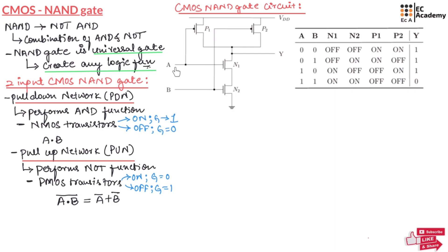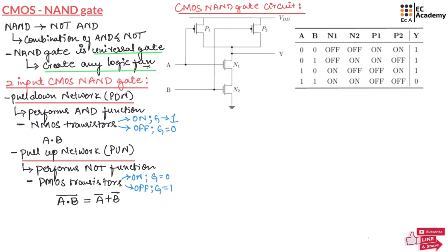When A is equal to 0 and B is equal to 1, transistor N1 will be OFF, N2 will be ON, P1 will be ON, and P2 will be OFF. Since transistor P1 is ON, VDD will be available at the output through the PMOS transistor P1. That is why the output will be equal to 1.